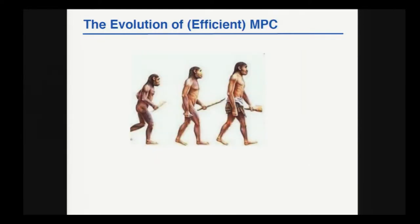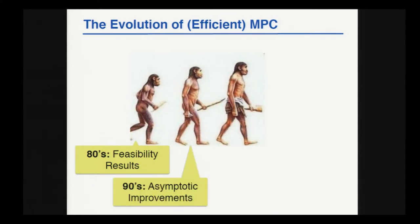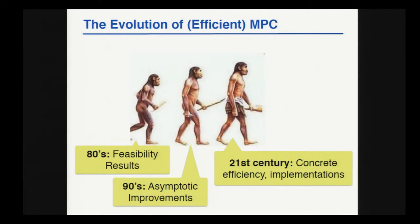What is the evolution of the field in terms of efficiency? The Big Bang was in the 80s with the first feasibility results. In the 90s, we had some great works on improving asymptotic efficiency of the solutions. And recently, we had great solutions with practical efficiency, and we have implementations demonstrating a huge potential in the field.